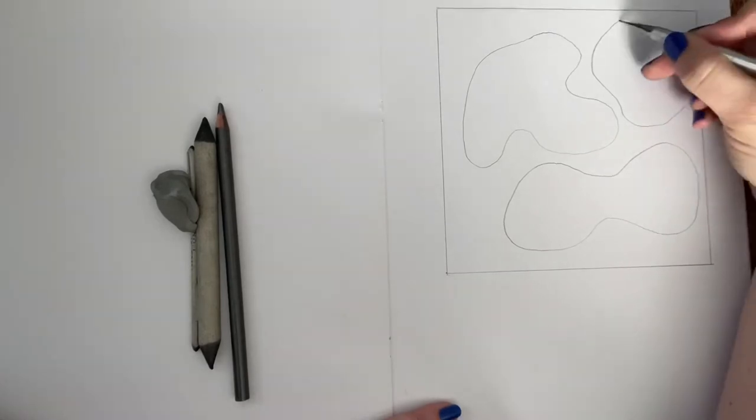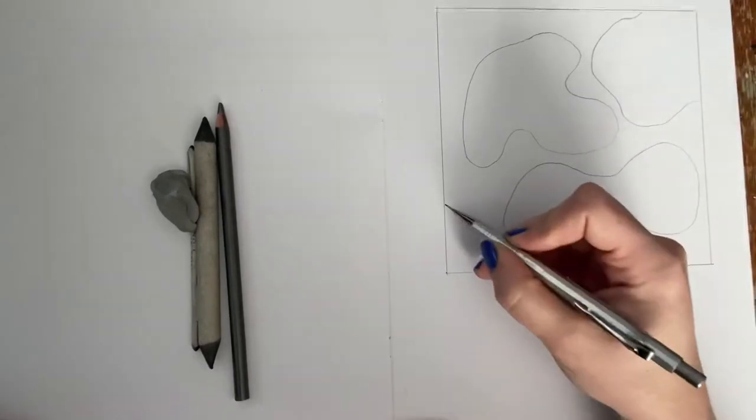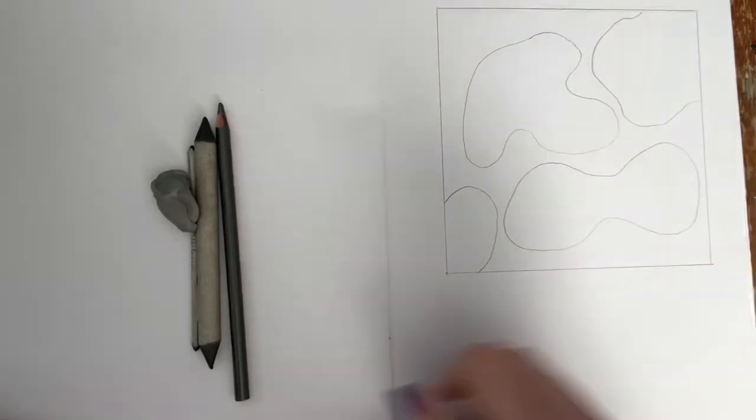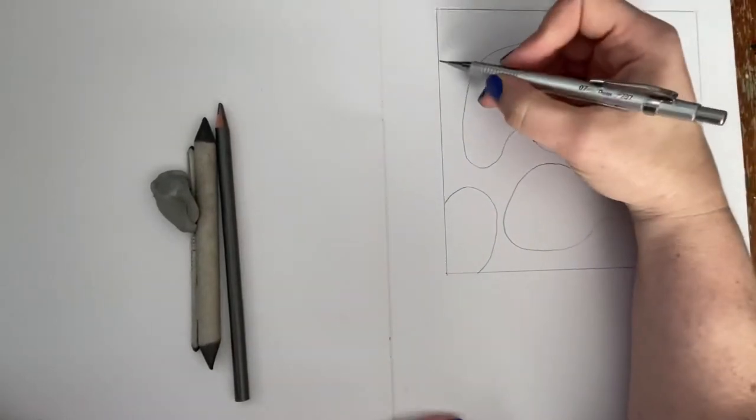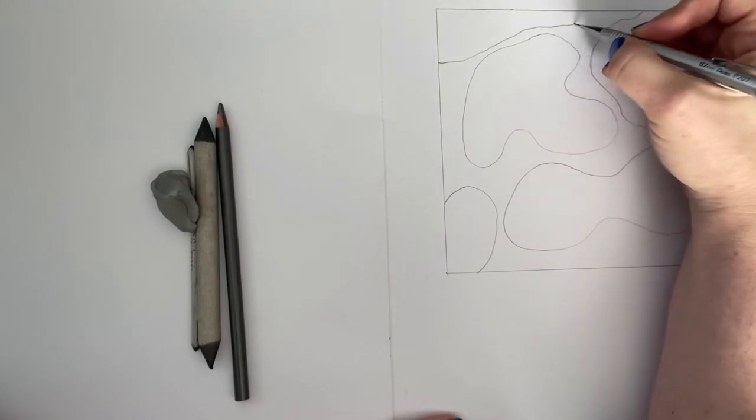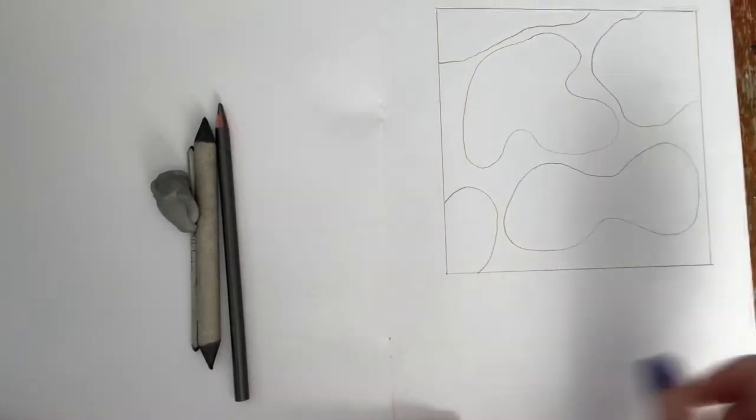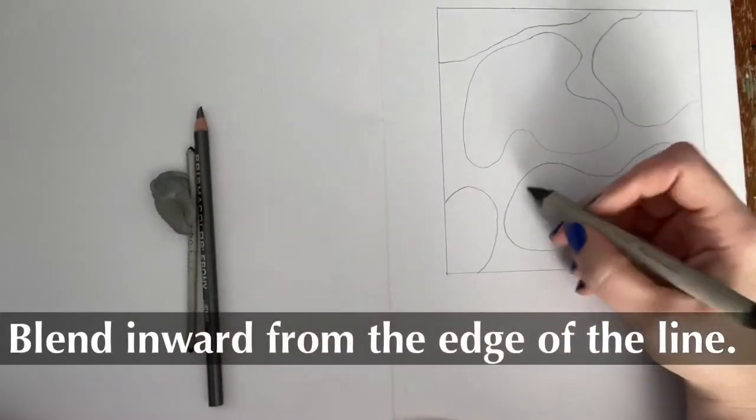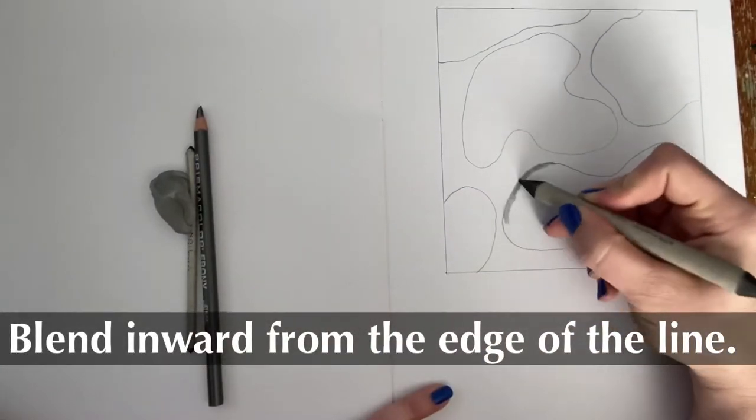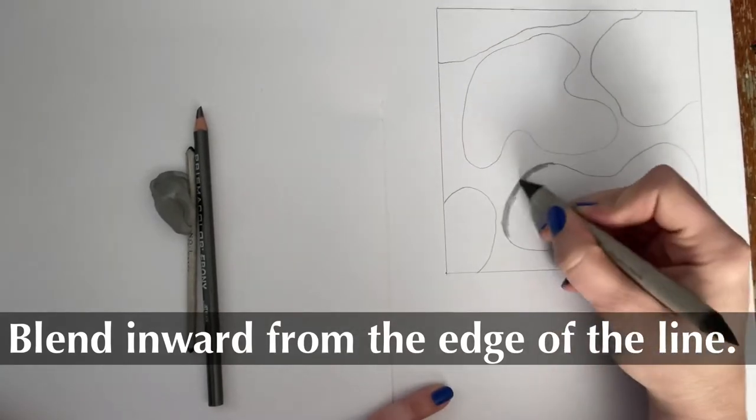They can go off the side of the picture plane if you want them to. And then, yeah, maybe one more. I'm going to take my dirty blending stump and spread some of that graphite around.